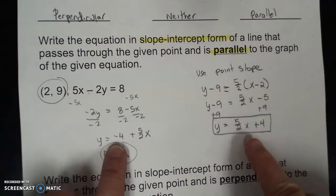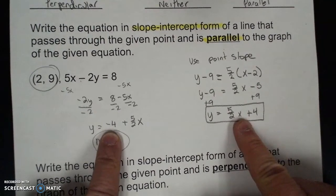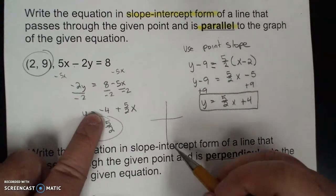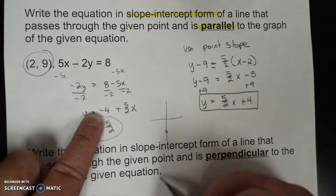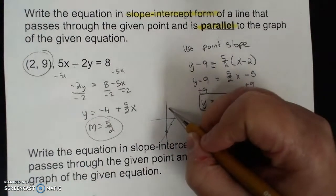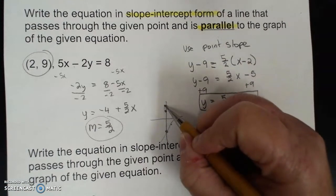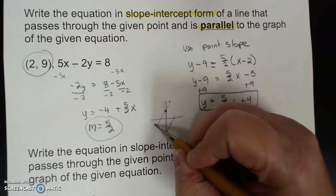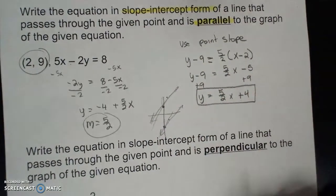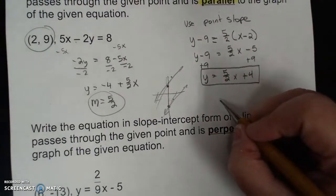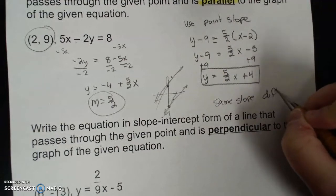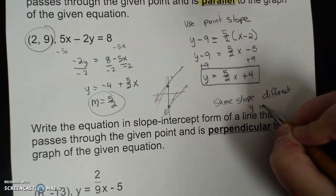Notice that these two lines have the same slope but different y-intercepts. So if I sketch this out, the original line starts at negative 4 and goes up 5 and over 2. The new line starts at positive 4 and goes up 5 and over 2, and they would be parallel. Same slope, different y-intercept.